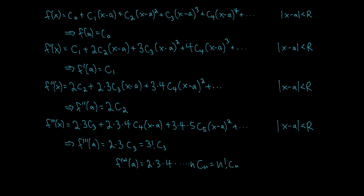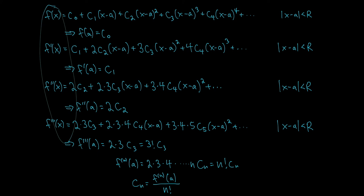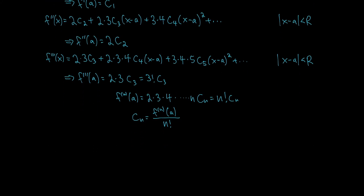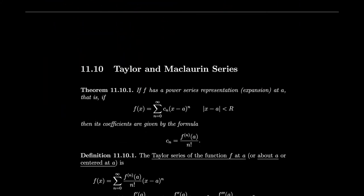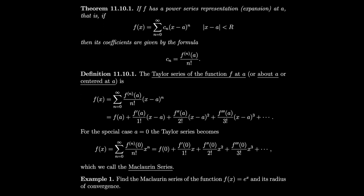Solving for c_n, we divide both sides by n factorial to get that each coefficient equals the nth derivative at a divided by n factorial — assuming f has a power series representation. Note we treat the zeroth derivative as the original function itself, so this formula works for all derivatives. This sufficiently proves the theorem.